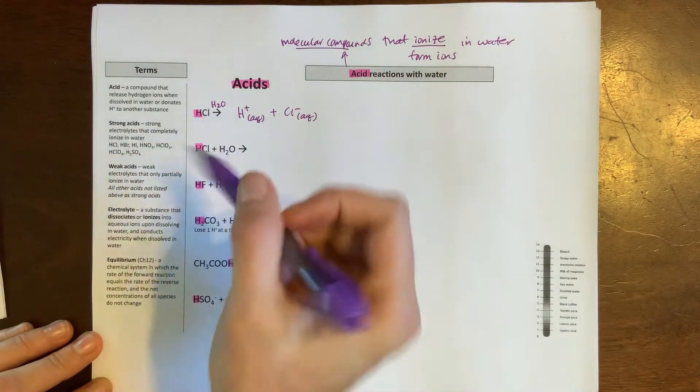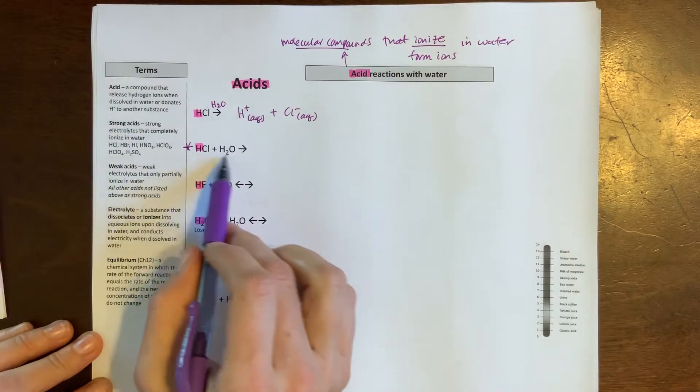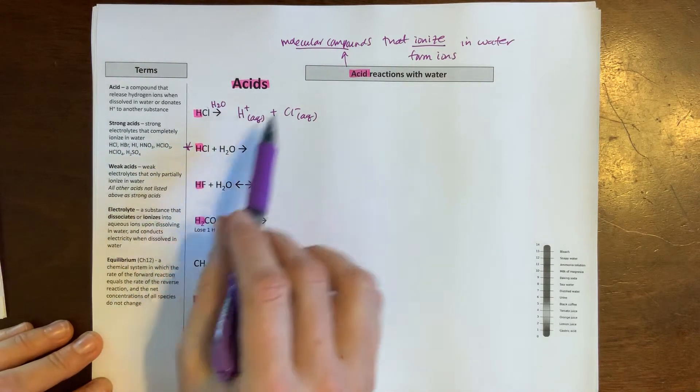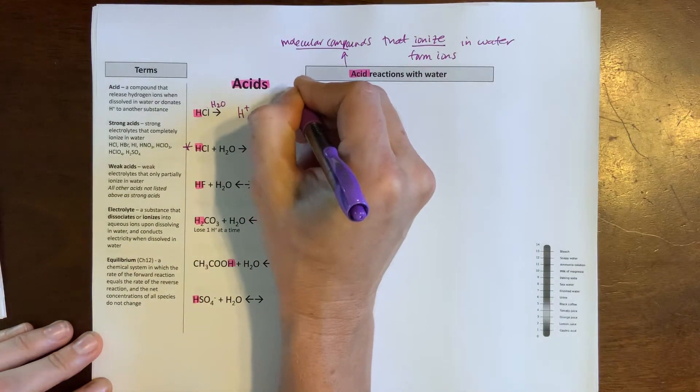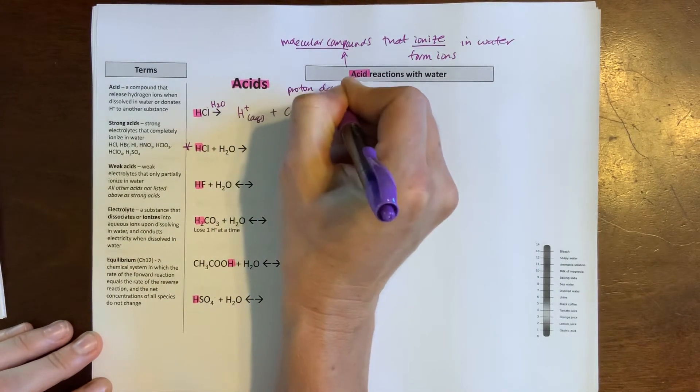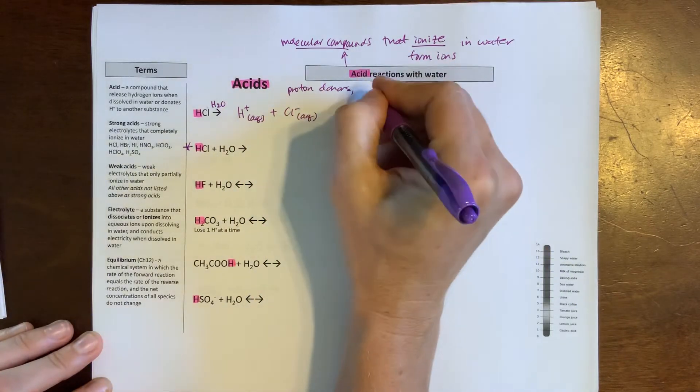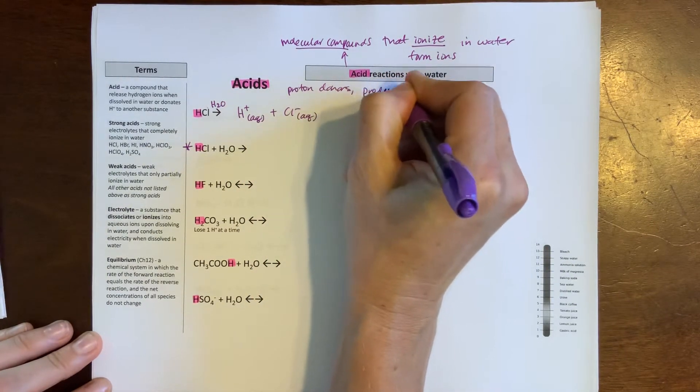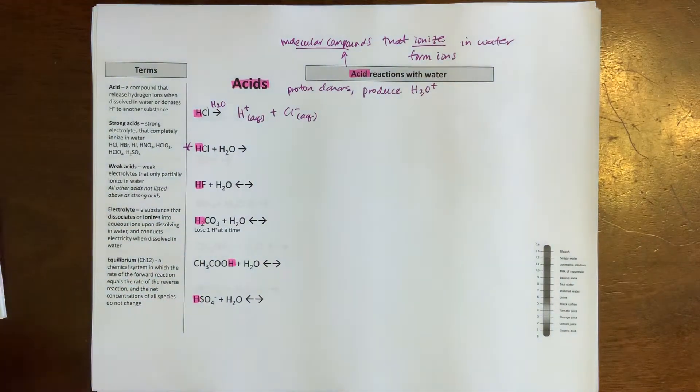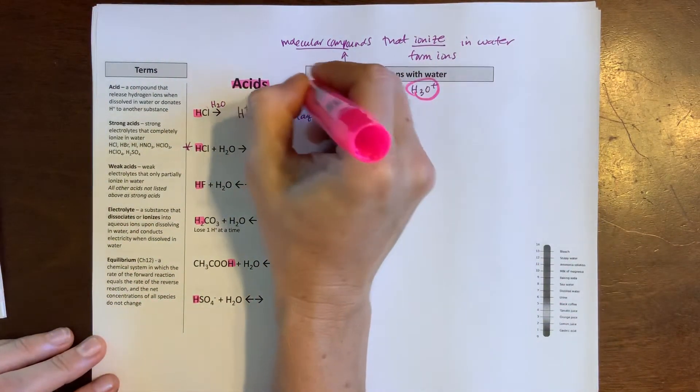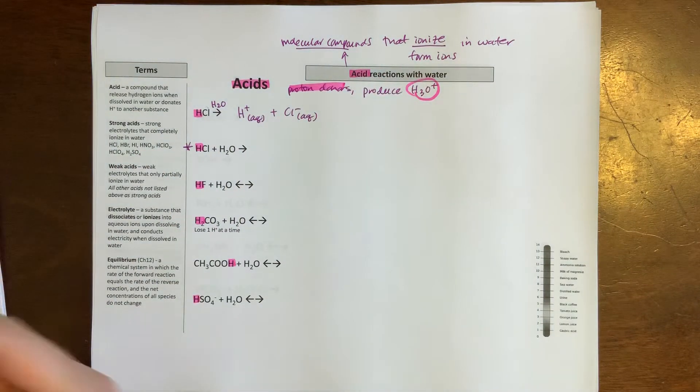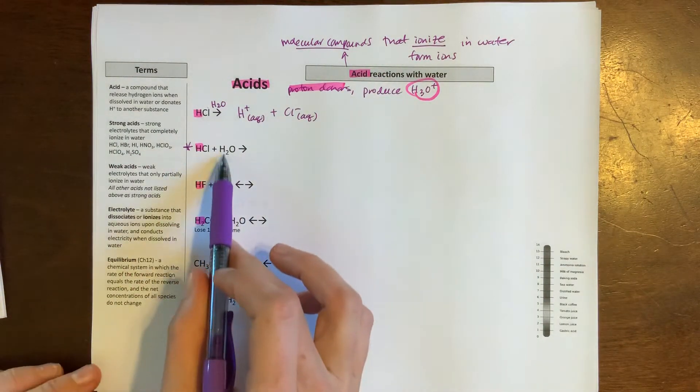Next up is a different way to show this reaction, and this is going to be the style that we prefer. With our acids, remember that they are going to be proton donors, or another way that we described them was that they produce hydronium. So we're going to look for both of these: donating protons and producing hydronium as I write the rest of these reactions.